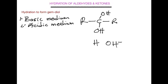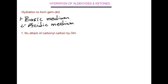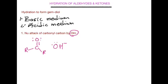The first condition we're going to look at is the basic medium. In this case the nucleophile attacking the carbonyl carbon is the hydroxide anion. We have our carbonyl compound — R bonded to carbon, another R, double bonded to oxygen which has two lone pairs — and our attacking nucleophile is OH minus, an oxygen with three lone pairs. The nucleophile comes straight to the partially positive carbon and the pi bond breaks.